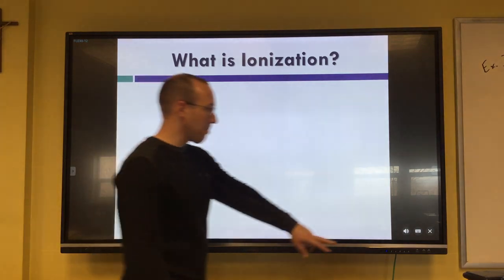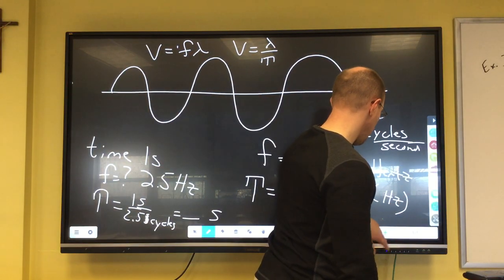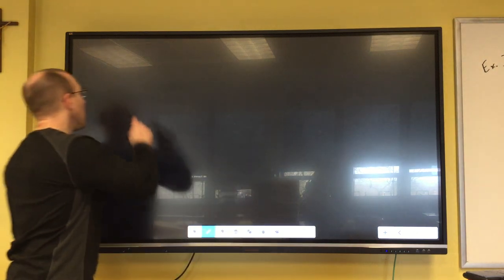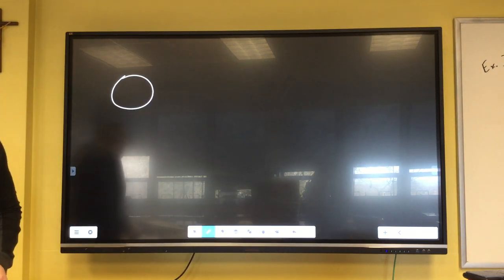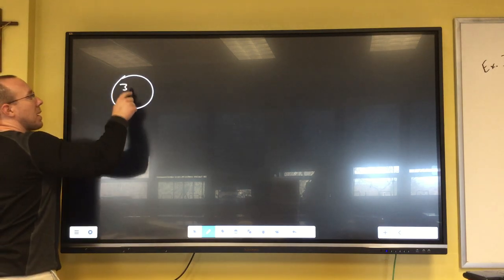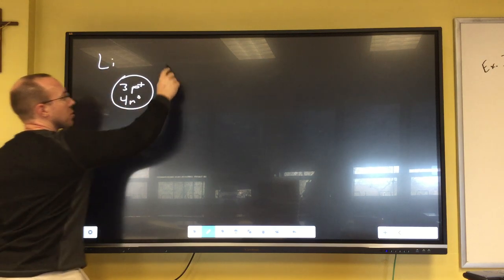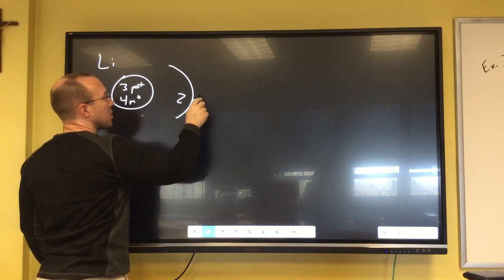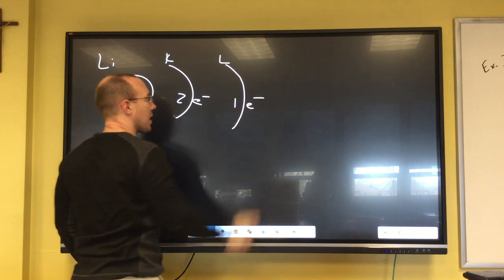Okay, so let's get out of here. You're going to need your periodic table out. Let's take lithium for example. Lithium has three protons, it has four neutrons, and it has two in the first energy level electrons and one in the second energy level.